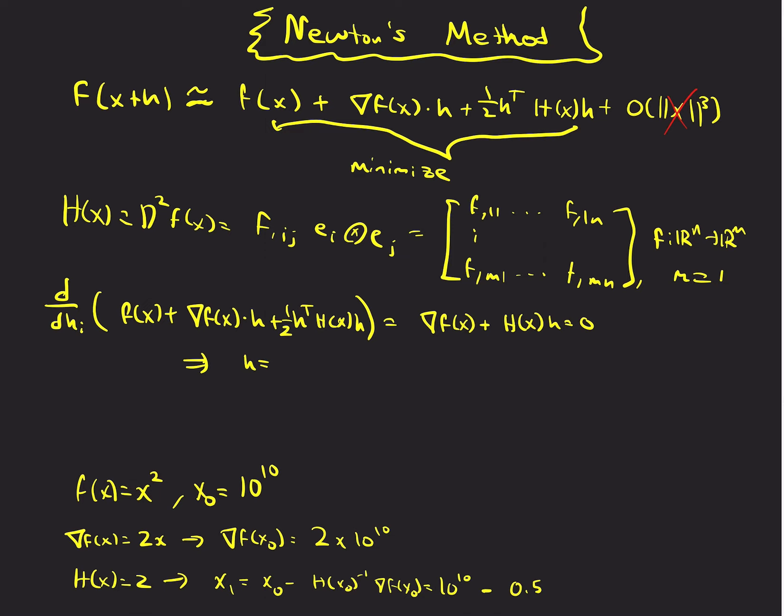And so h is, or yeah, dh. But you do this component-wise. So h is the Hessian inverse times the gradient minus, oh, minus, minus this.